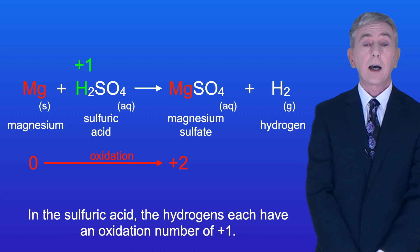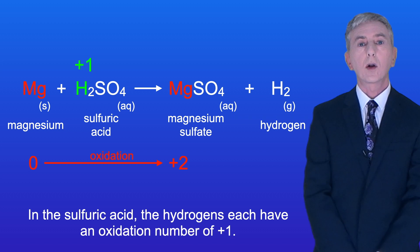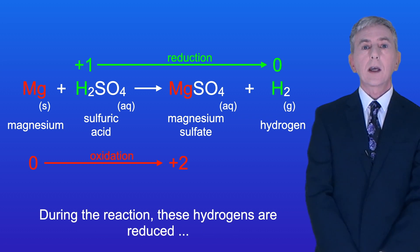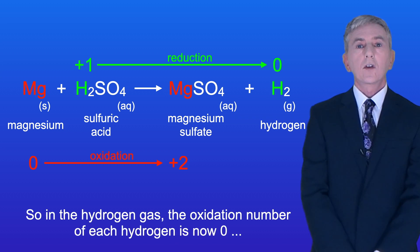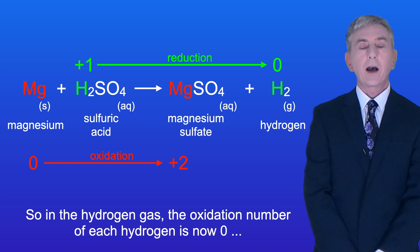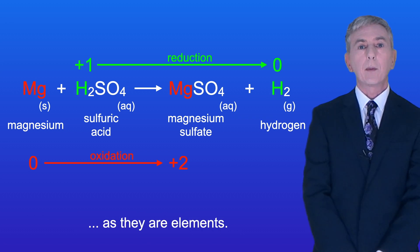In the sulfuric acid the hydrogens each have an oxidation number of +1. During the reaction these hydrogens are reduced as they each receive one electron from the magnesium. So in the hydrogen gas the oxidation number of each hydrogen is now zero as they're elements.